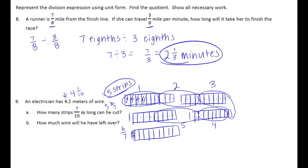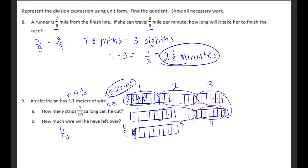How much wire will he have left over? He'll have 6 of the 7 pieces left, but that's really 6 tenths because the pieces are out of 10. So 6 tenths left over.